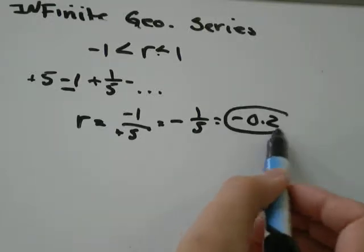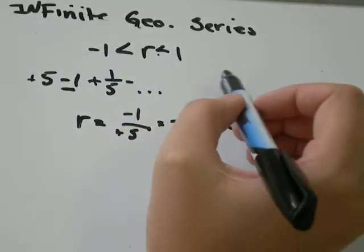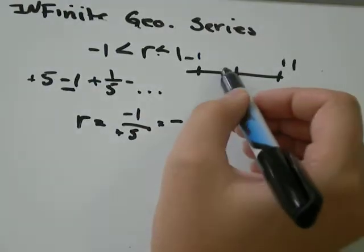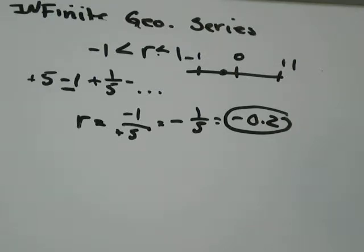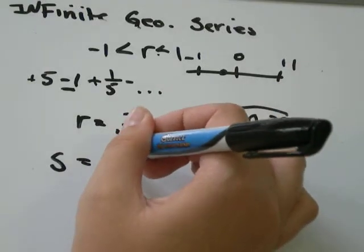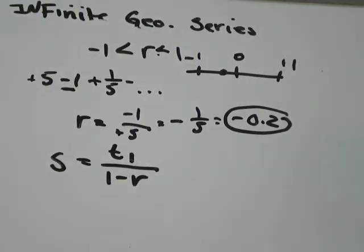So because negative 0.2 is in between negative 1 and positive 1, if we looked on our number line, negative 0.2 would be like around here somewhere, we know that the series is going to converge. So we can find its sum using the formula S equals T1, the first term, over 1 minus R, the common ratio. Which is pretty cool.